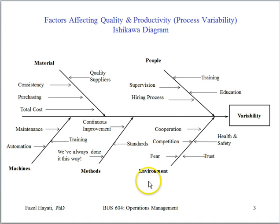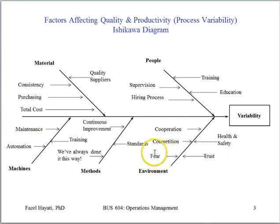The environment of the process or the organization is very important. Do we work in an environment of cooperation or competition? Competition often leads to a win-lose relationship, and cooperation leads to a win-win relationship. Is there fear in the environment? As one of Dr. Deming's 14 points states: drive out fear in the workplace. Fear often destroys communication and leads to operators and workers not reporting problems. Is our workplace healthy and safe to work? That is also a factor in understanding variation in a process.